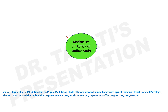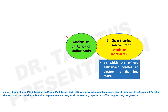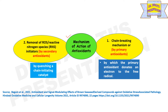Depending upon the mechanism of action of antioxidants, we can classify them into two groups: primary antioxidants and secondary antioxidants. The first mechanism is the chain-breaking mechanism, followed by primary antioxidants, where they donate an electron to the free radical. The second mechanism is associated with the removal of reactive species initiators by quenching a chain-initiating catalyst. Primary antioxidants are more powerful as they eliminate millions of free radicals, whereas secondary antioxidants can quench only one free radical and quickly lose their antioxidant property without possibility of renewal.